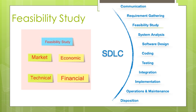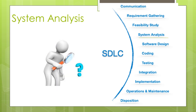The team also checks if there is any possibility of the software being no more useful. It is determined whether the project is financially, practically, and technologically feasible for the organization to take up. There are many algorithms available which help the developer to conclude the feasibility of a software project.